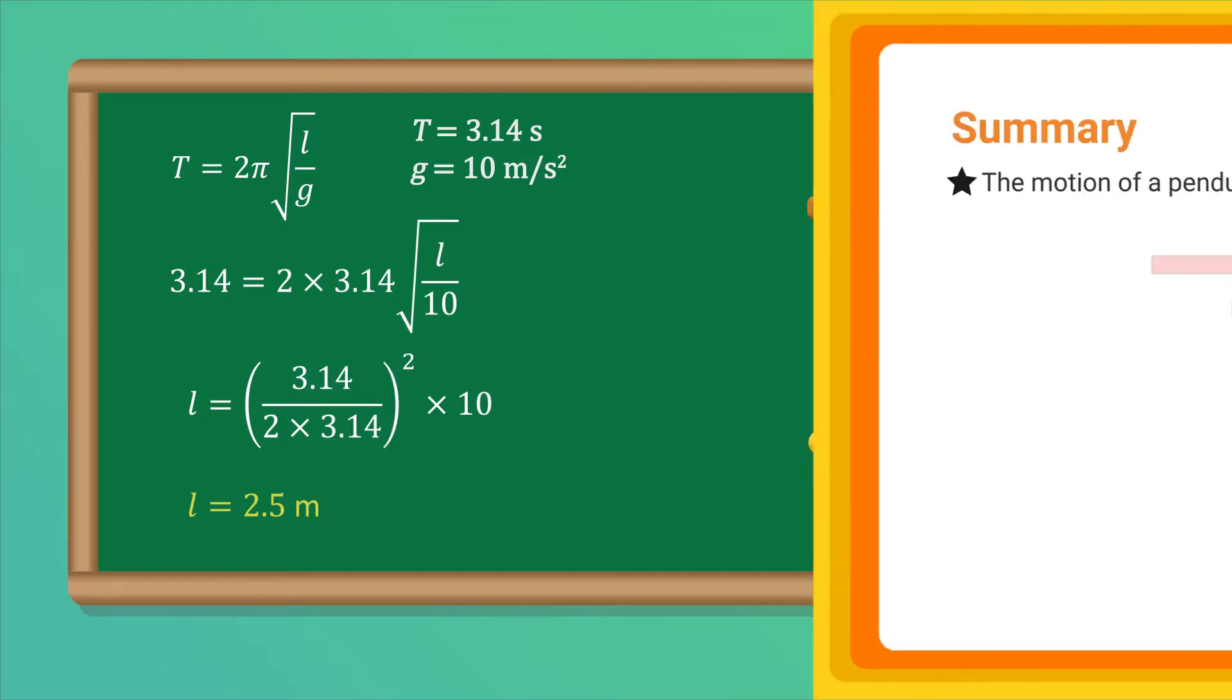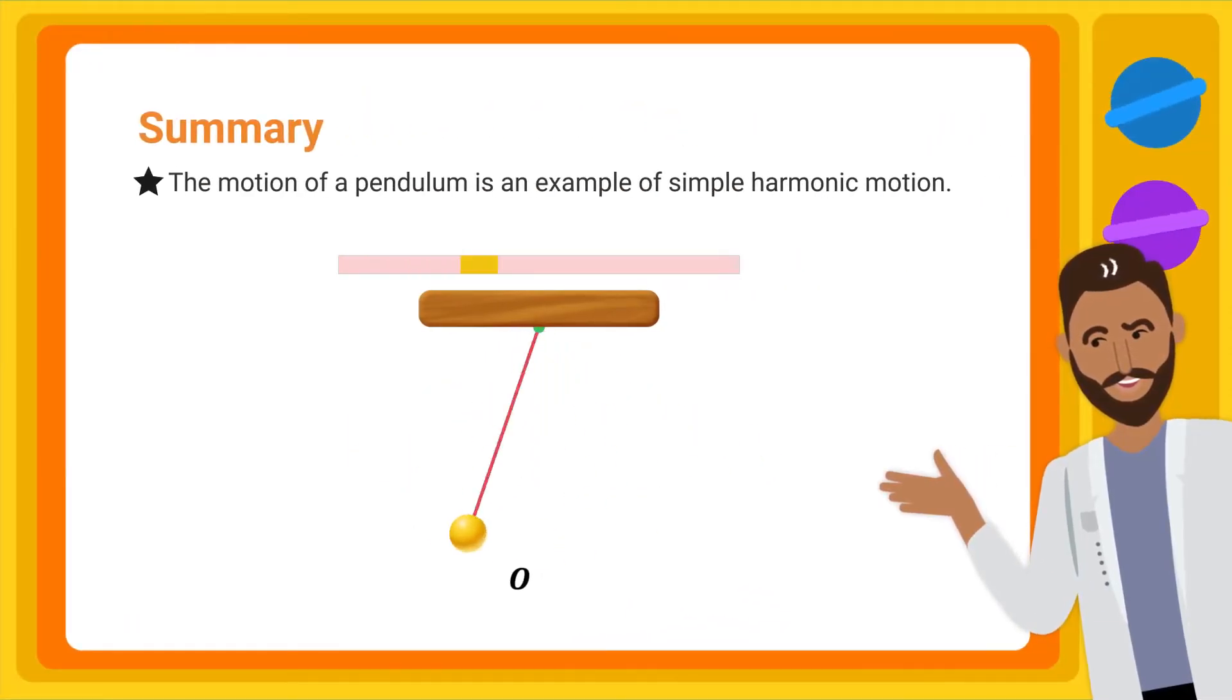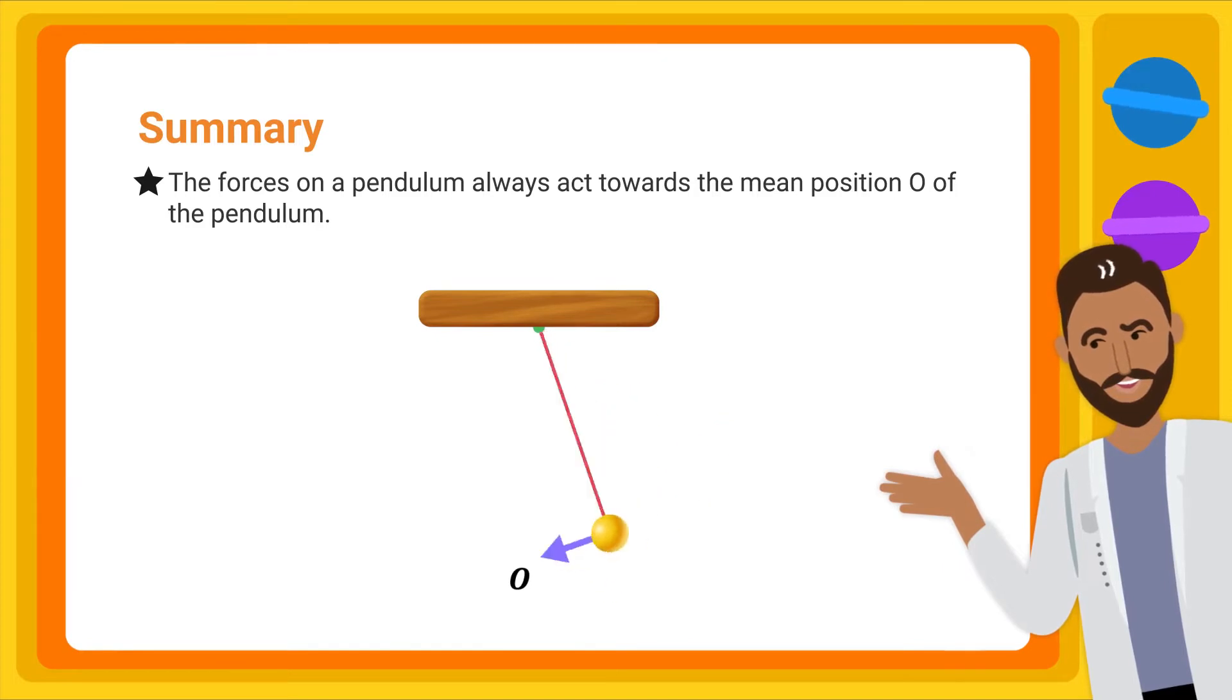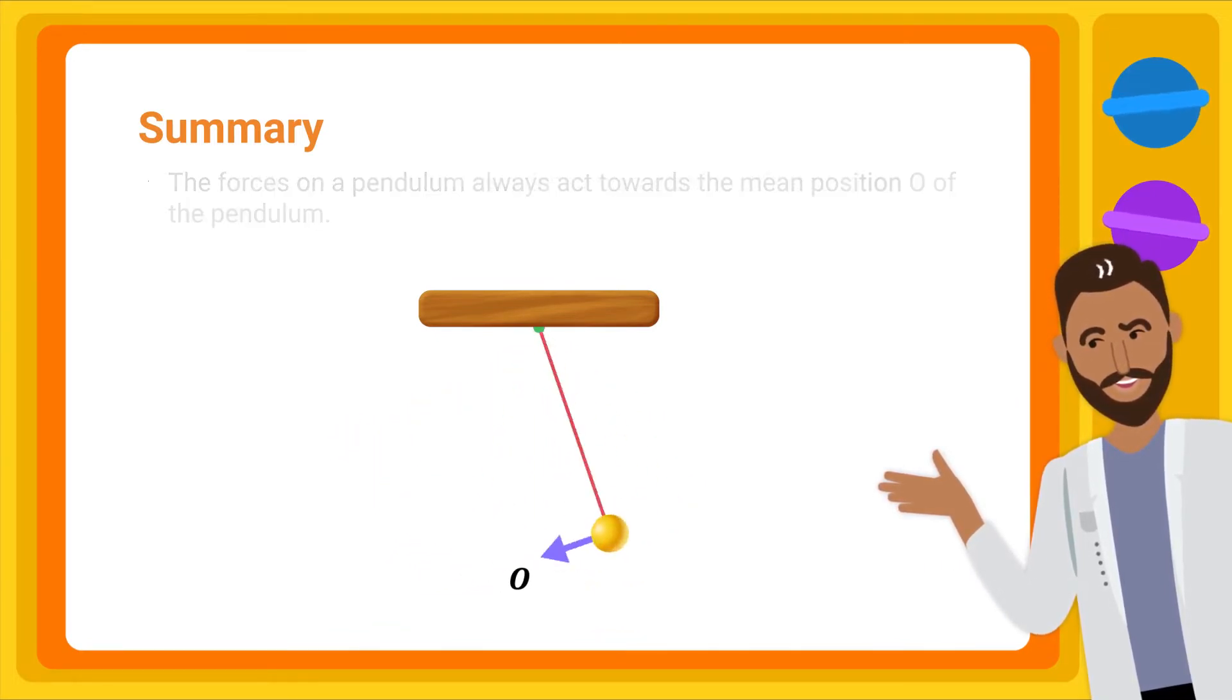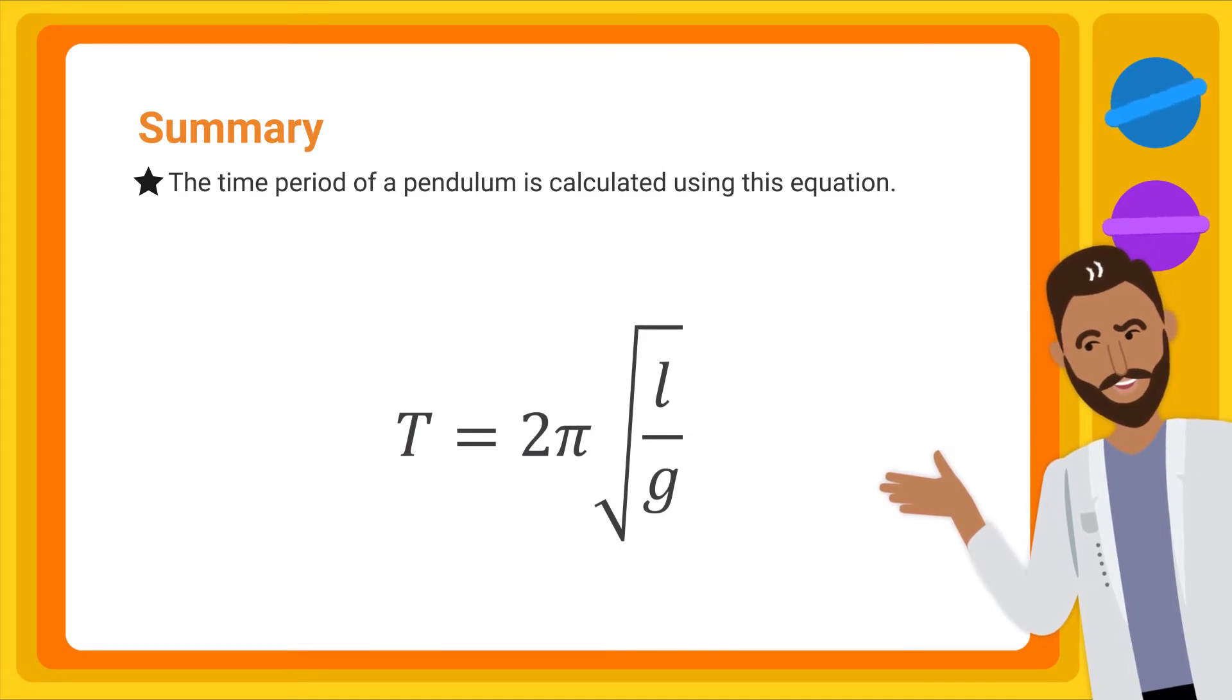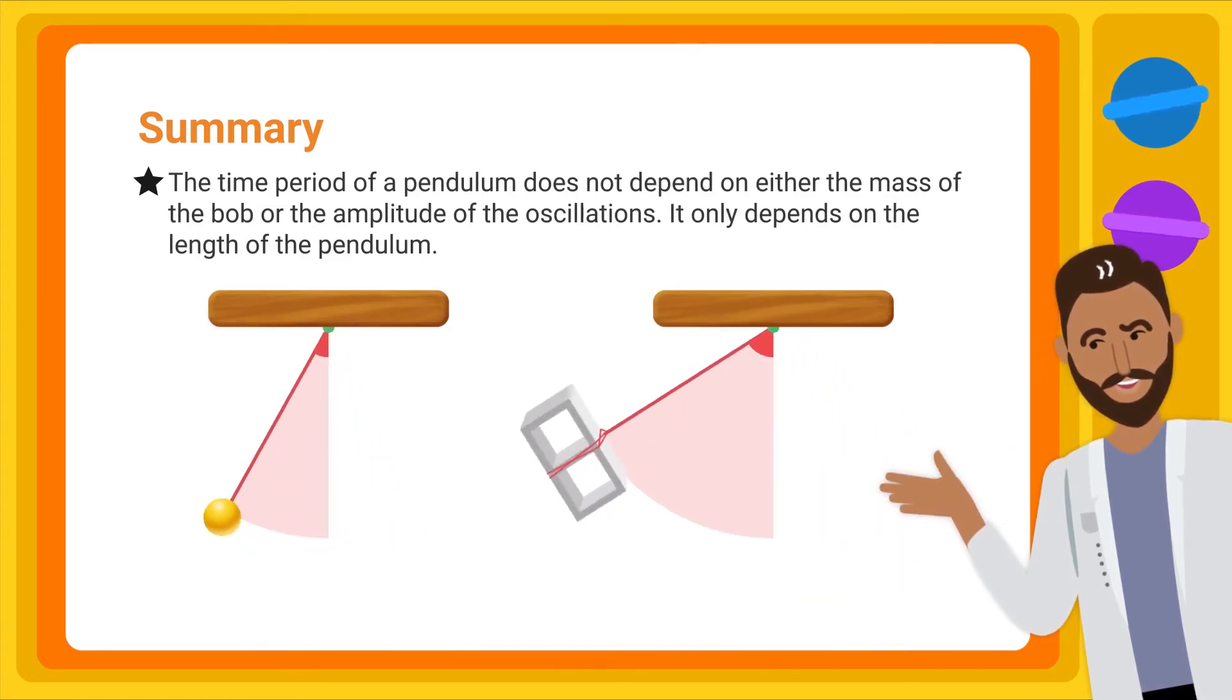To summarize, the motion of a pendulum is an example of simple harmonic motion. The forces on a pendulum always act towards the mean position O of the pendulum. The time period of a pendulum is calculated using this equation. The time period of a pendulum does not depend on either the mass of the bob or the amplitude of the oscillations. It only depends on the length of the pendulum.